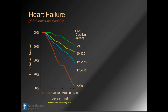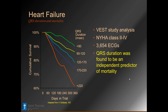Most of these patients, as they dilate, tend to rip up their fascicles and bundles, getting bundle branch block. We know from CRT studies that as the bundle gets wider and QRS becomes wider, morbidity and mortality becomes much worse in terms of long-term survivability. In the VET study, QRS duration was found to be an absolutely independent predictor of mortality, which got us into the age of ICDs and cardiac resynchronization therapy.